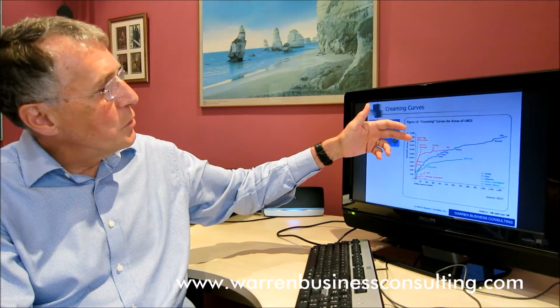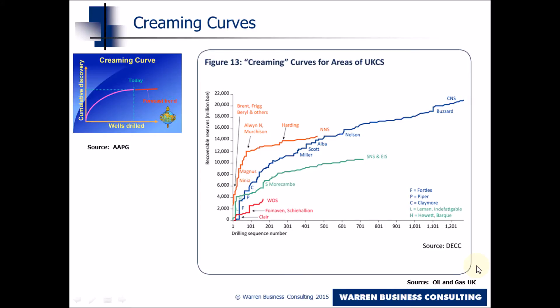These curves are telling different stories about these basins. If we go to the Northern North Sea, you can see that after the initial exploration phase, very quickly all the large fields were discovered very early on in the basin. There's a very steep rise to a point, after about 70 wells, when the incremental resources being added were relatively modest compared to the early years.